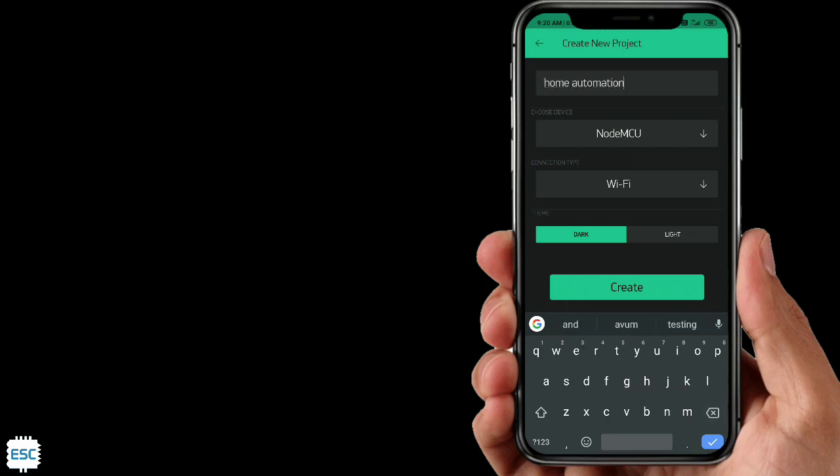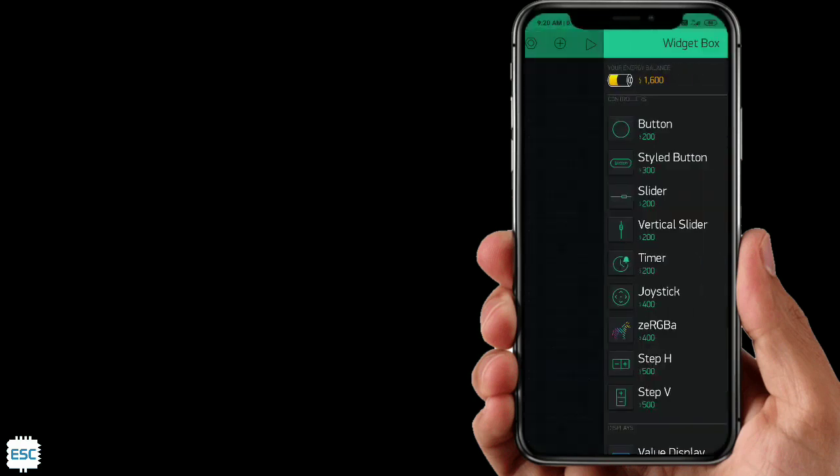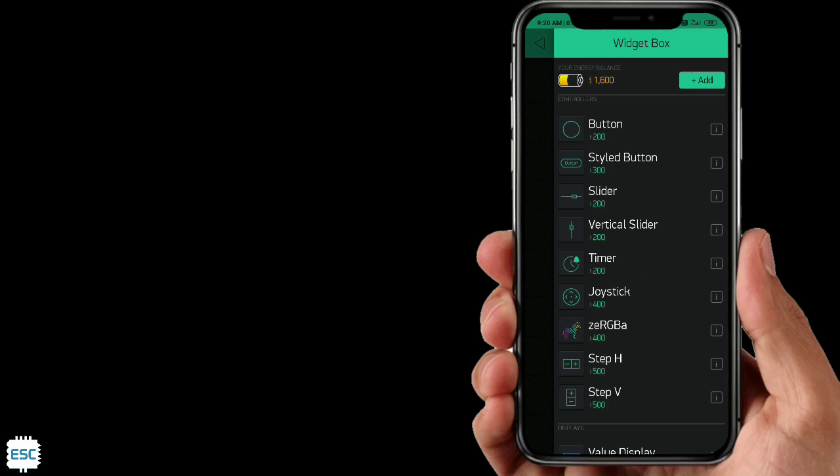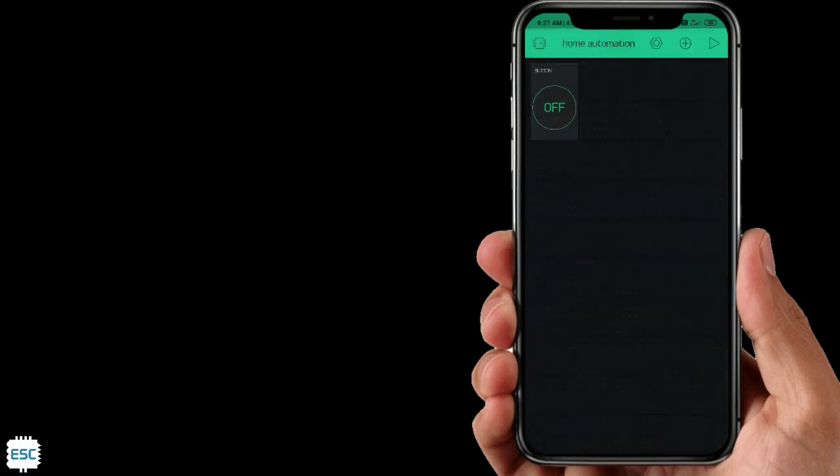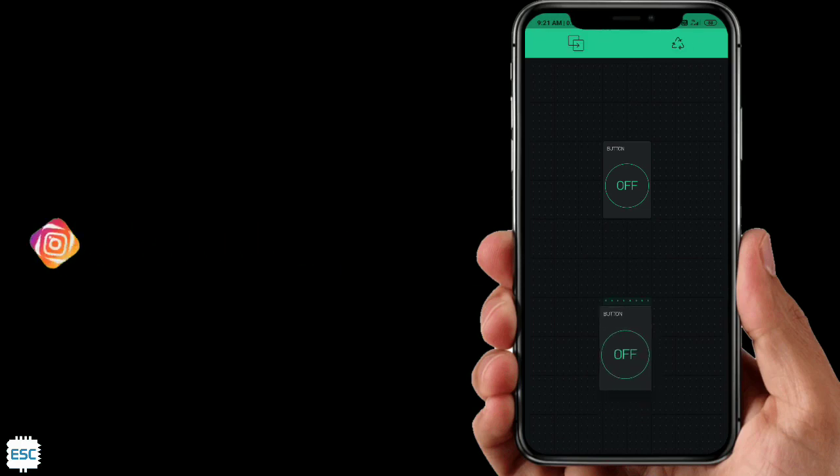Now click on create. It says the authentication token is sent to our email. Click on add and select button, select two buttons for two LEDs. Place those buttons according to your ideas and click on first button.